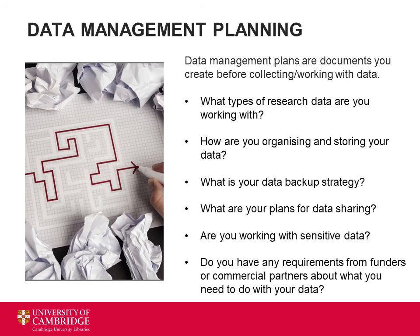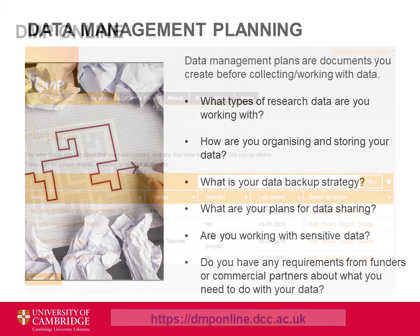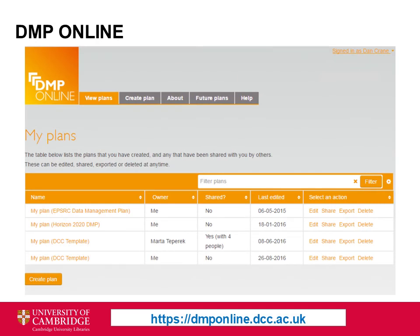The best way to ensure you're addressing all the issues around managing your data is by creating a data management plan. This is a document you write before you begin data collection, and which you can update as your research develops. It helps you think through questions like: what types of data are you working with? What is your strategy for organising, storing, backing up and sharing your data? And who has responsibility for your data? The website DMP Online is an online tool for creating and sharing a personalised data management plan. Visit dmponline.dcc.ac.uk and sign in. It's okay if you don't have answers to all the questions just yet, but they should prompt you to think about what you need to find out about and plan for.